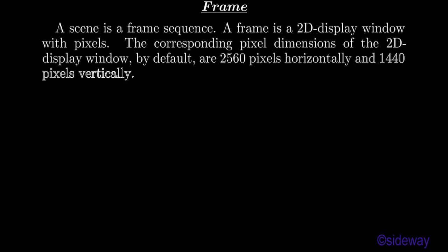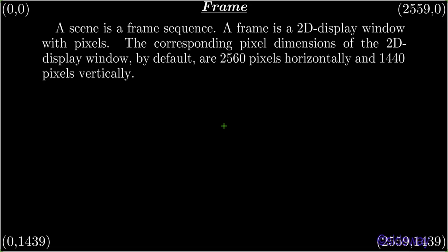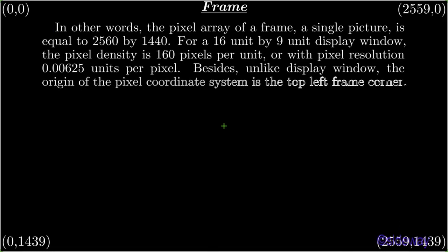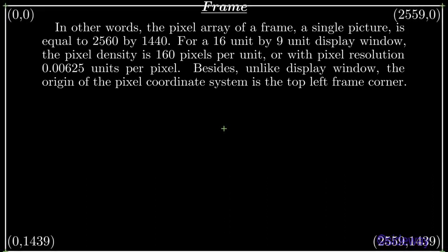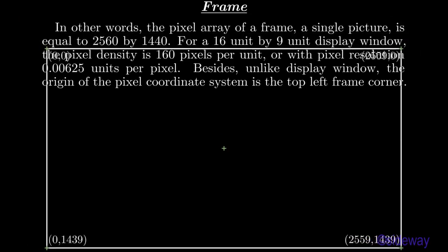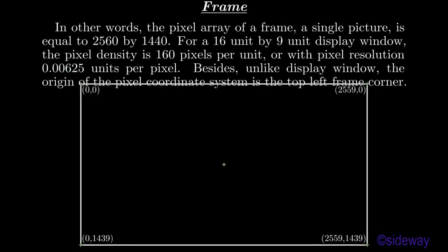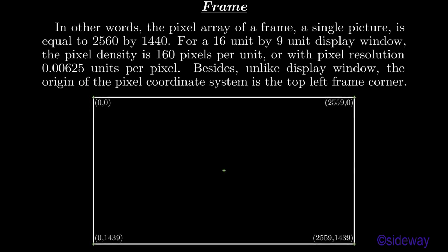A scene is a frame sequence. A frame is a 2D display window with pixels. The corresponding pixel dimensions of the 2D display window by default are 2560 pixels horizontally and 1440 pixels vertically. In other words, the pixel array of a frame is 2560 by 1440 for a 16-unit by 9-unit display window. The pixel density is 160 pixels per unit, or with pixel resolution 0.00625 units per pixel. Unlike the display window, the origin of the pixel coordinate system is the top-left frame corner.